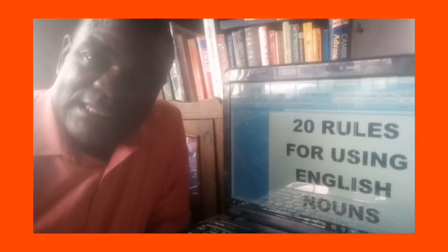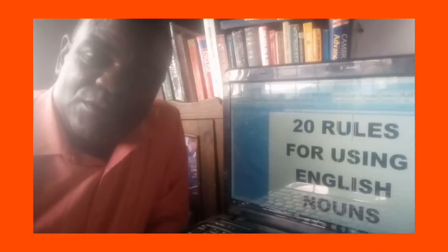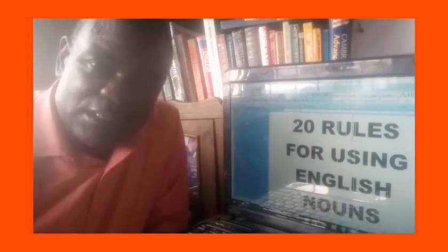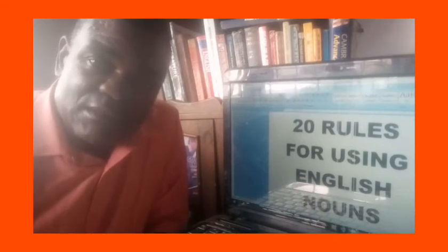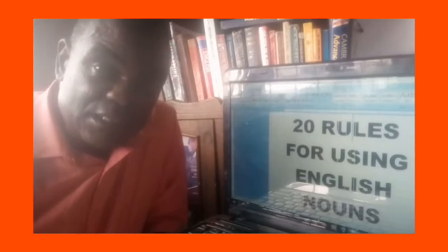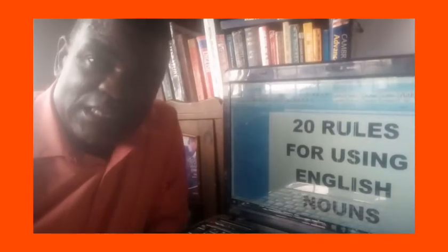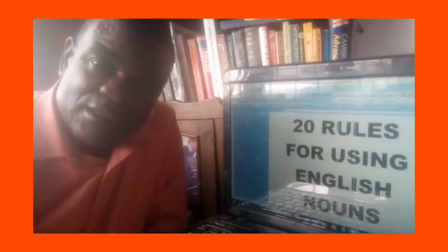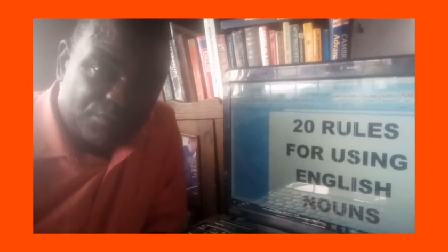It could be a place. Lagos is a noun. Man is a noun. Ben, John, or Rose — these are nouns. A box, a book — these are nouns. Simple as they seem, they are always misused. There are different grammatical errors arising from the wrong use of English nouns.